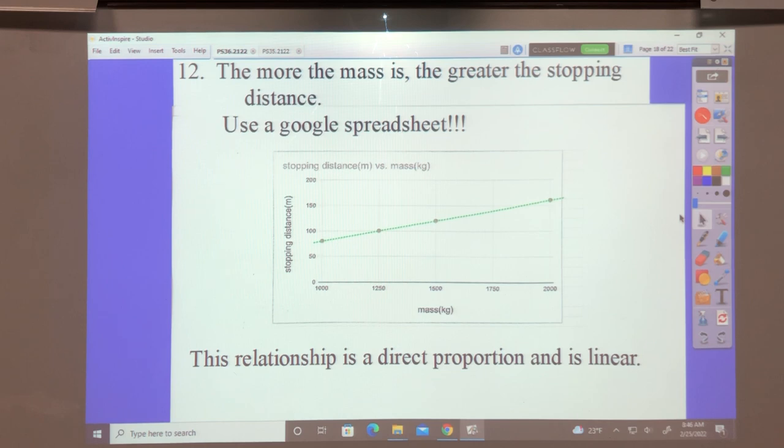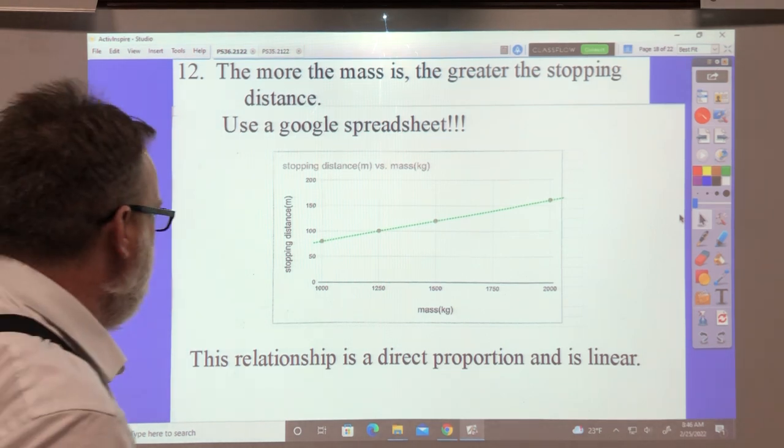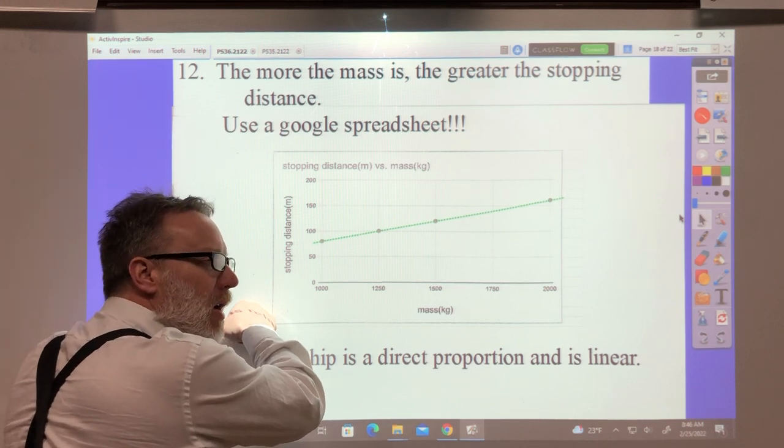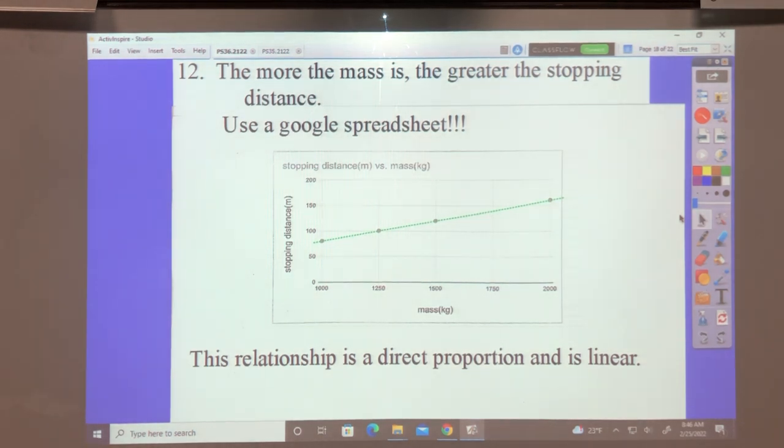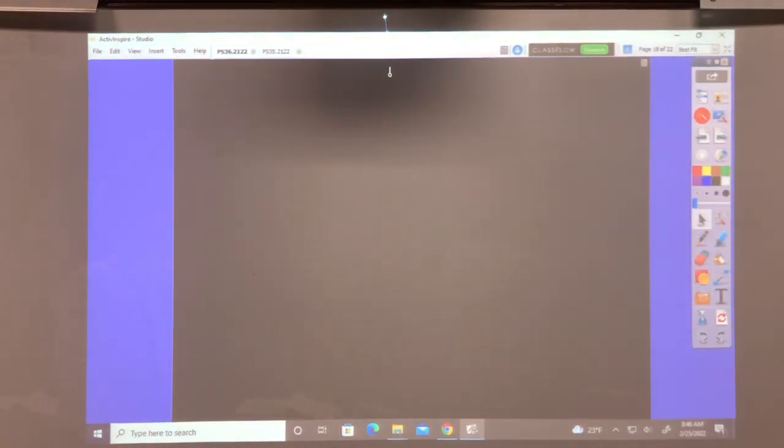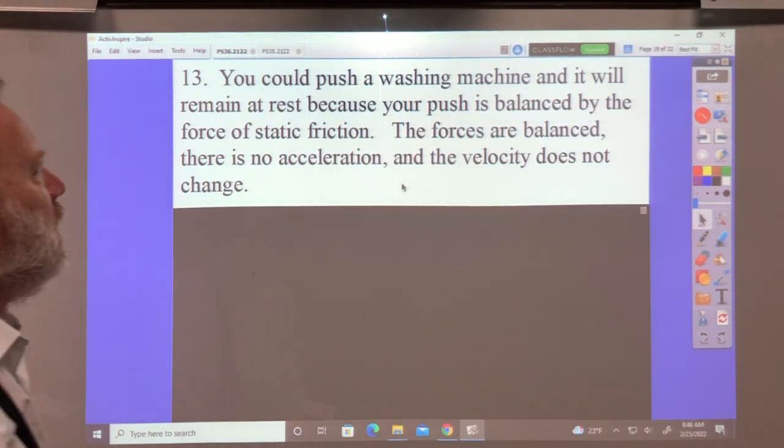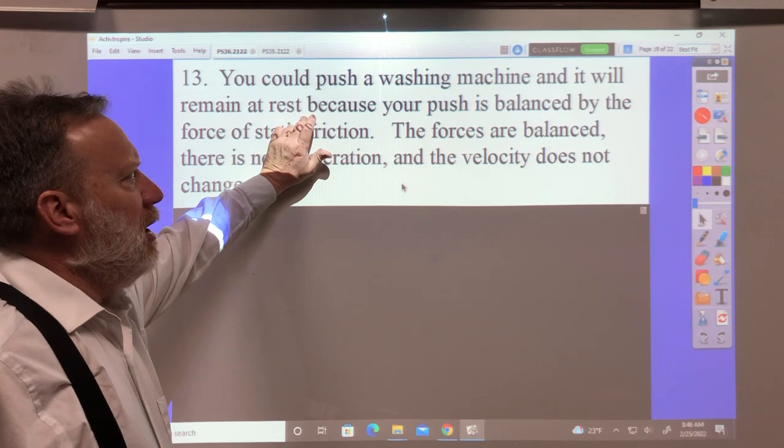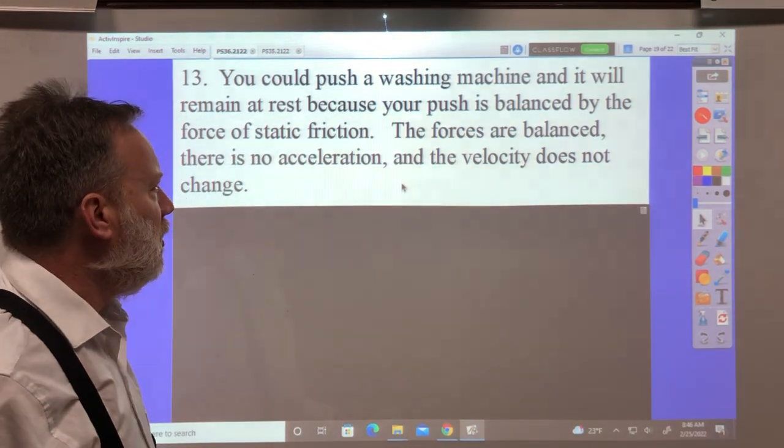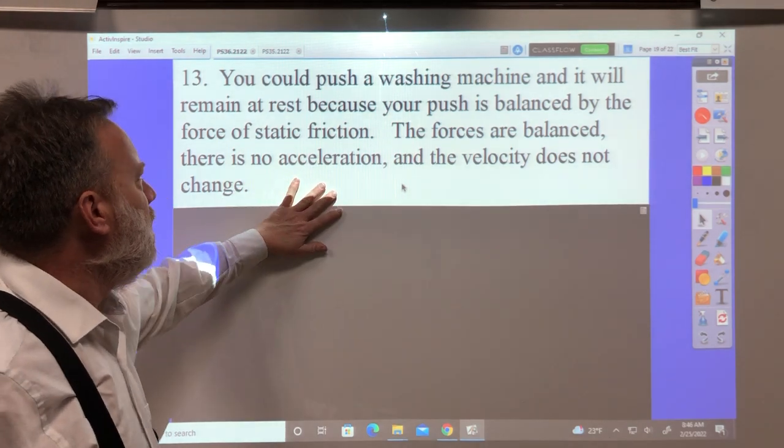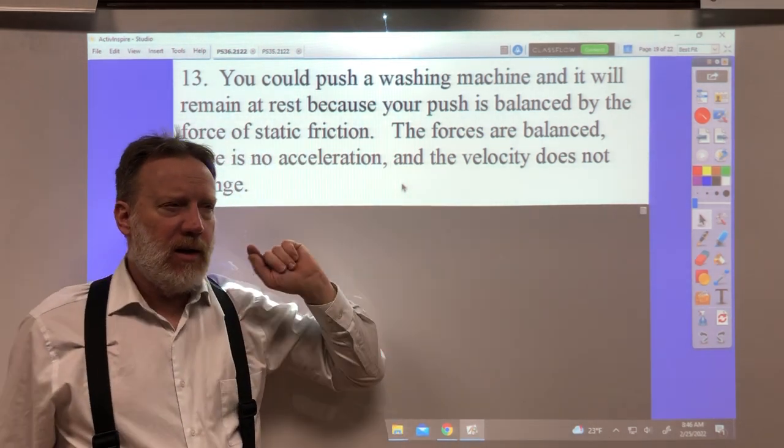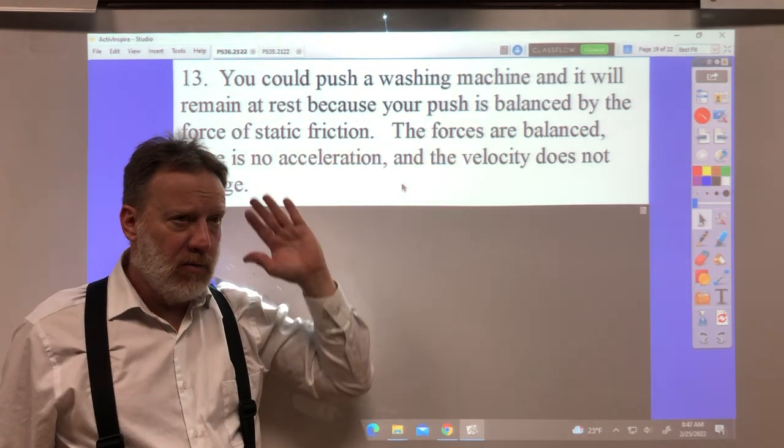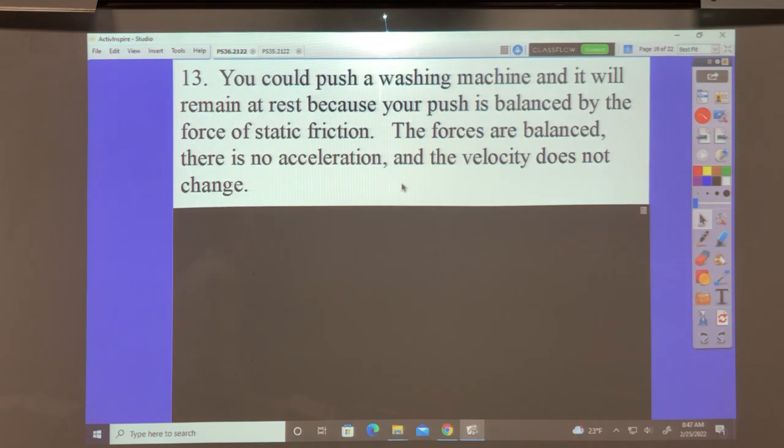Number 13. Give an example of a force applied to an object that does not change the object. Like, I could push on this wall. It doesn't matter how hard I push. It's not going anywhere. There's no motion. There's no acceleration. So, let me give you an example from here. I could push a washing machine, and it would be at rest, because the push would be balanced by the static friction against the floor. The forces are balanced. There's no acceleration. The velocity doesn't change. It's not important that the velocity is zero so much it's important that the velocity is going to remain zero. It's not going to increase or decrease.